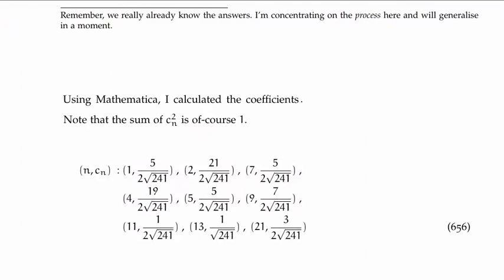I used Mathematica to calculate the coefficients explicitly, and it gives us a list of numbers showing n and the probability amplitude. Notice the sum of the squares of the c sub n's is 1, which it has to be because the probabilities must sum to 1.